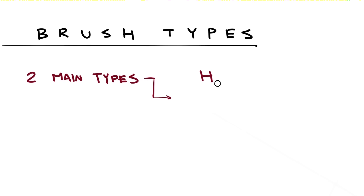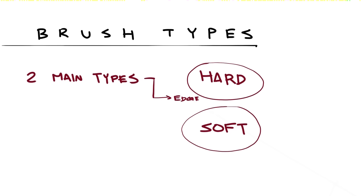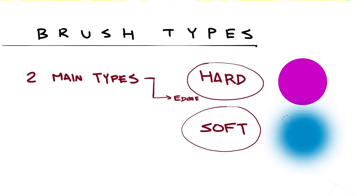First, it's important that we at least establish the properties that make up a digital brush. The most important distinction is in the edges. There are hard-edge brushes and soft-edge brushes. The border of a hard-edge brush is solid and defined, while a soft-edge brush just kind of fades off and creates no defined shape.